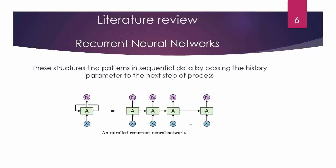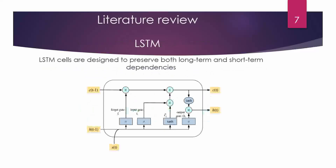Recurrent neural networks, which are the state-of-the-art algorithms, are based on RNN architectures. These structures are able to find patterns in time series or sequential data by passing the history parameter to the next step of the process. LSTMs are one of the good architectures based on recurrency, which can preserve both long-term and short-term dependencies in the data, and have shown promising results compared to vanilla RNNs.